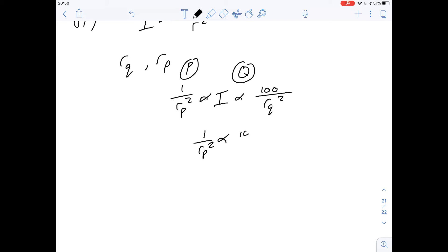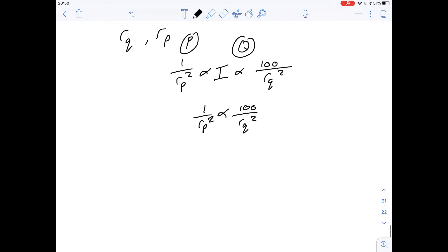So we can get rid of the middle man here, and we can see that we've got one over RP squared is going to be proportional to 100 over RQ squared. So then what we could do, just to make this even easier, we could say RP squared is going to be proportional to RQ squared over 100. If we multiply both sides by 100, we get 100 RP squared is going to be proportional to RQ squared. And then we can just take the square root of both sides. And this is going to turn into a 10, and this is going to be RP proportional to RQ.